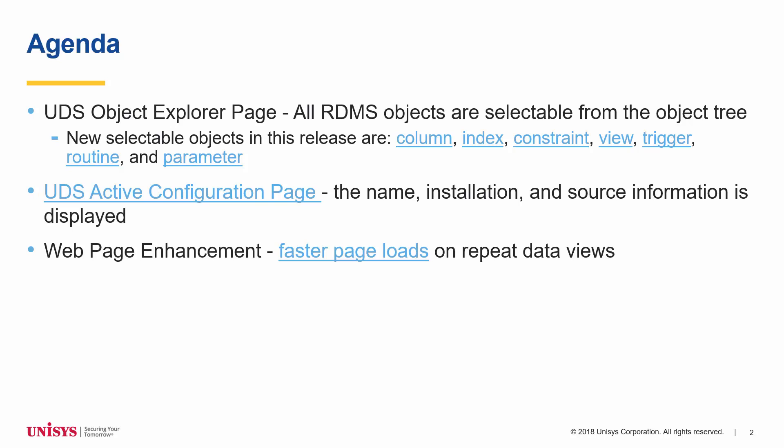On the UDS Object Explorer page, the remaining RDMS objects are selectable from the object tree. These objects include columns, indexes, constraints, views, triggers, routines, and parameters. Selecting one of these objects from the object tree displays the attributes, properties, and information relating to the object.